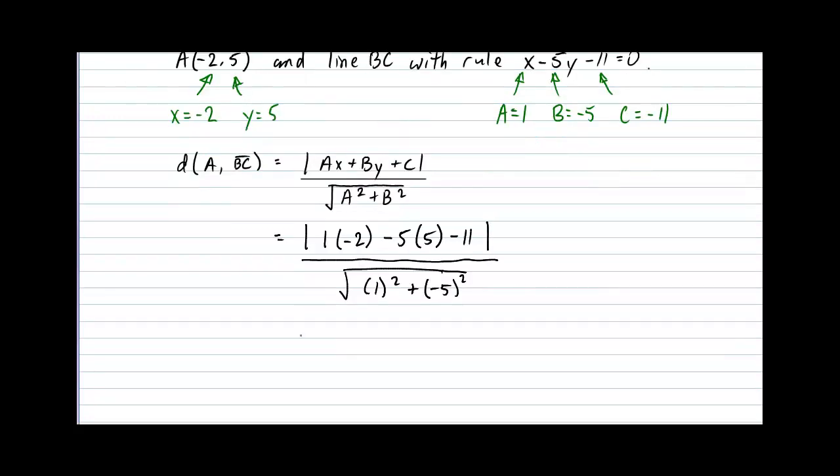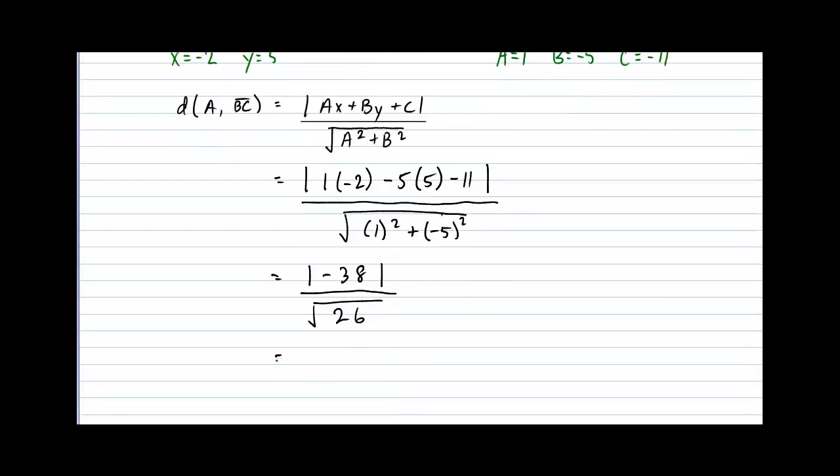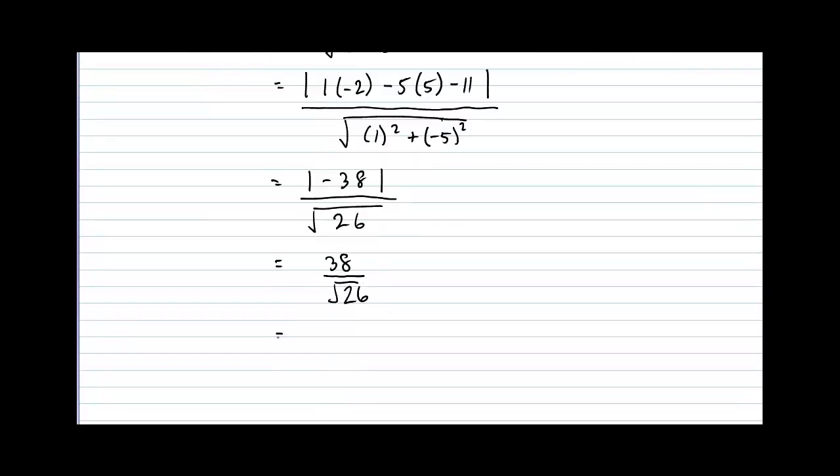Continuing our calculations, we have absolute value of negative 38, divided by the square root of 26. Absolute value of negative 38 gives us positive 38, still divided by the square root of 26. And that gives us an approximate distance of 7.45 rounded to two decimal places.